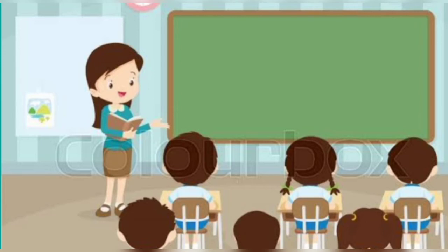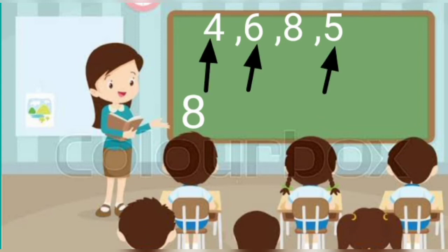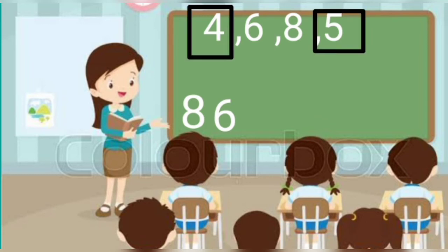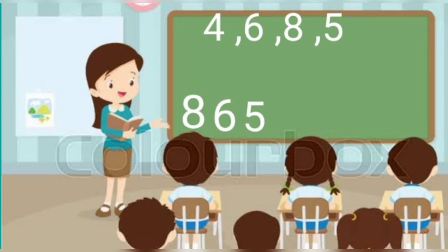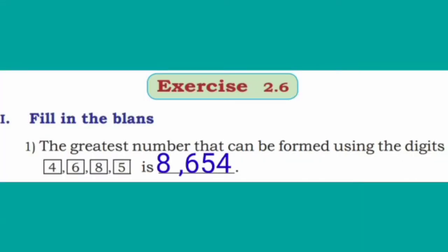Look at the board children. Here we have 4 digits: 4, 6, 8, 5. Among these, which is the greatest number? 8. Among the remaining 3 digits, which is the greatest? 6. Now take 4 and 5 — among these, which is the greatest? 5 is greatest, and the last number is 4. So we arrange the 4-digit number as 8, 6, 5, 4. The answer is 8,654.